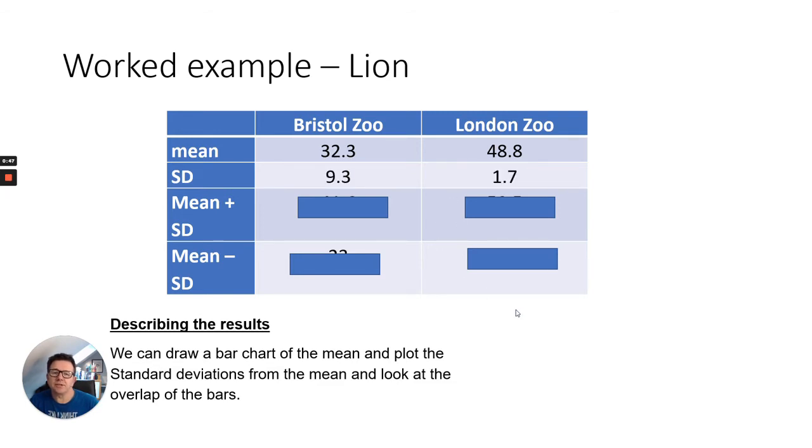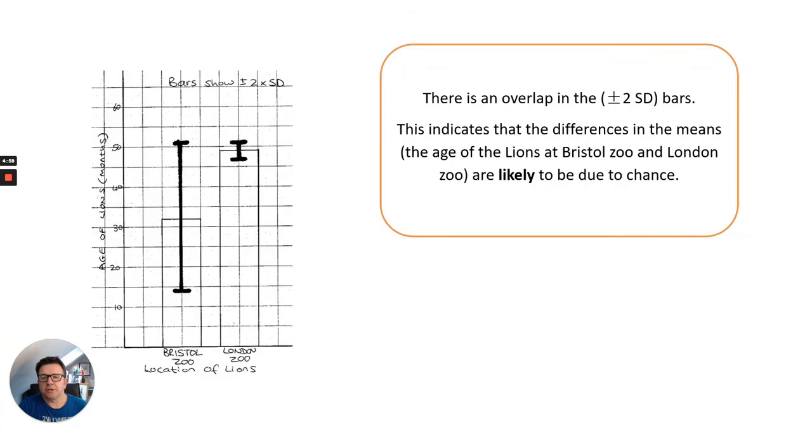When we look at the standard deviation, you can see there's a greater standard deviation for the lions at Bristol Zoo. And if we work out the means plus and minus the standard deviation, we can then draw a bar chart of the mean and plot the standard deviations from the mean and look at the overlap of the bars. So I've drawn a quick bar chart of the results. And as you can see, for the age of the lions, you can see there's a big difference in their means. But when we look at the standard deviations, there is an overlap between the standard deviation bars.